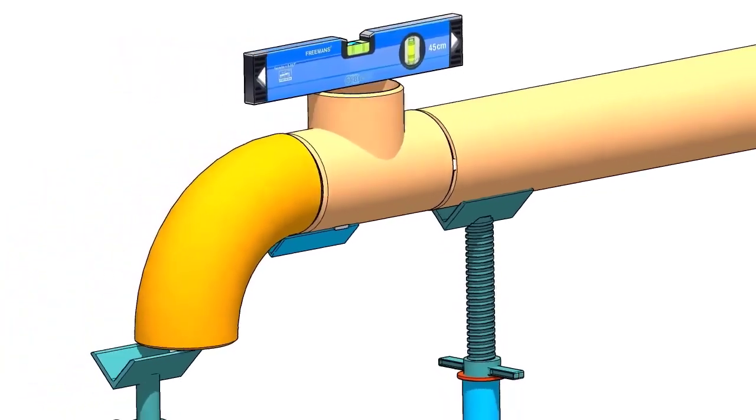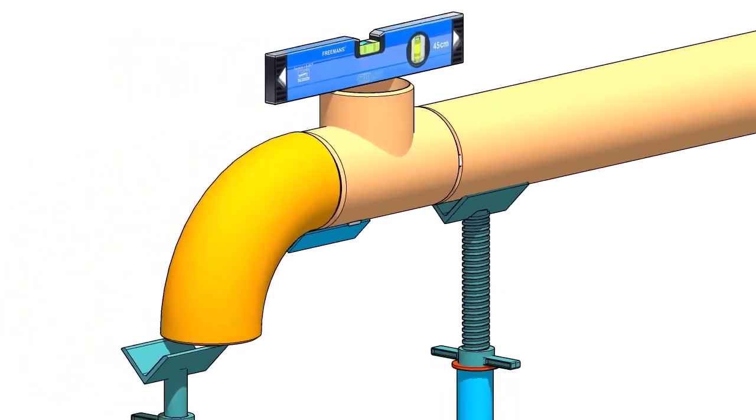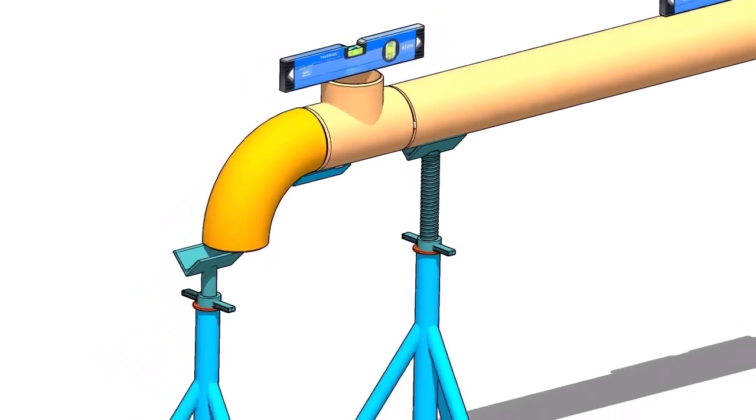Put the elbow on the angle cleat, provide proper support at the lower face of the elbow, unless it will fall down.